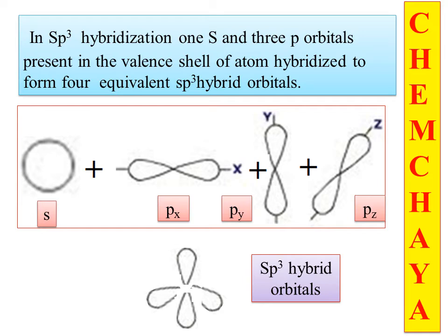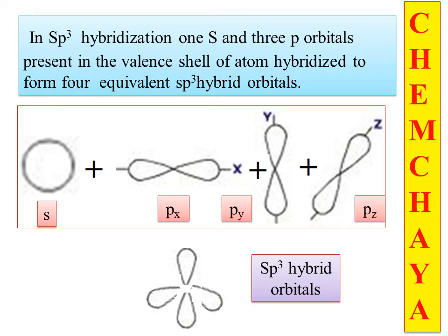The mixing up of atomic orbitals to form the hybrid orbitals is sp3 hybridization. One s and three p orbitals combine — four atomic orbitals combine — giving four sp3 hybrid orbitals. Now I am going to explain sp3 hybridization using the example of silicon.